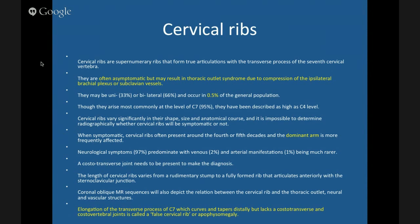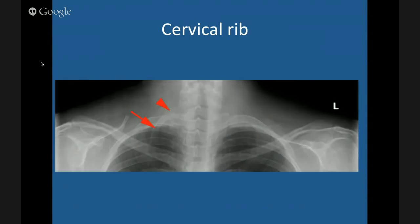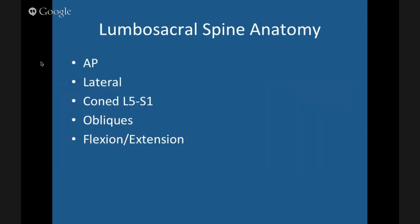A cervical rib is not to be confused with a hyperplastic transverse process of C7, known as a full cervical rib or acromiomegaly. Typically the transverse processes of thoracic vertebrae point upwards, so if a rib articulates with an upward-pointing process it's a thoracic rib; if the process points sideways or downward, it's a cervical rib. The importance is that cervical ribs can cause thoracic outlet syndrome. The size of the rib does not correlate with symptoms — you can have a big rib with no symptoms and a tiny rib with symptoms.